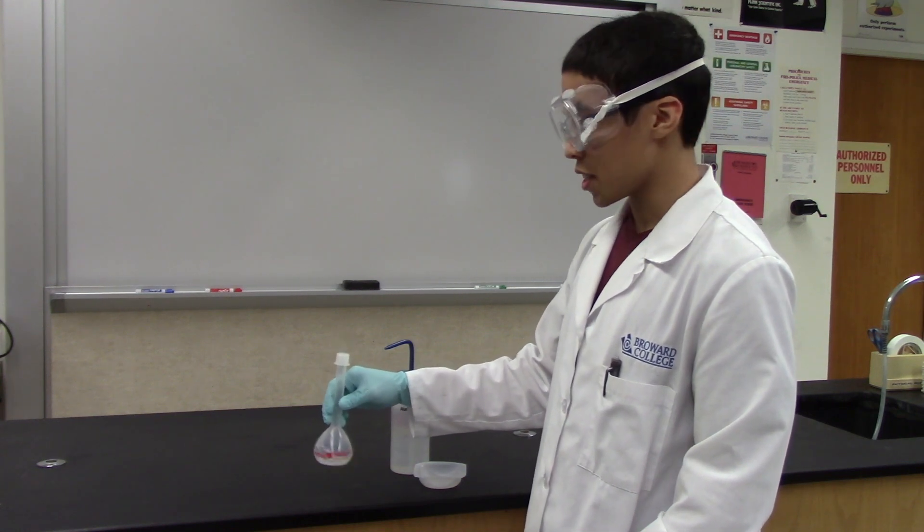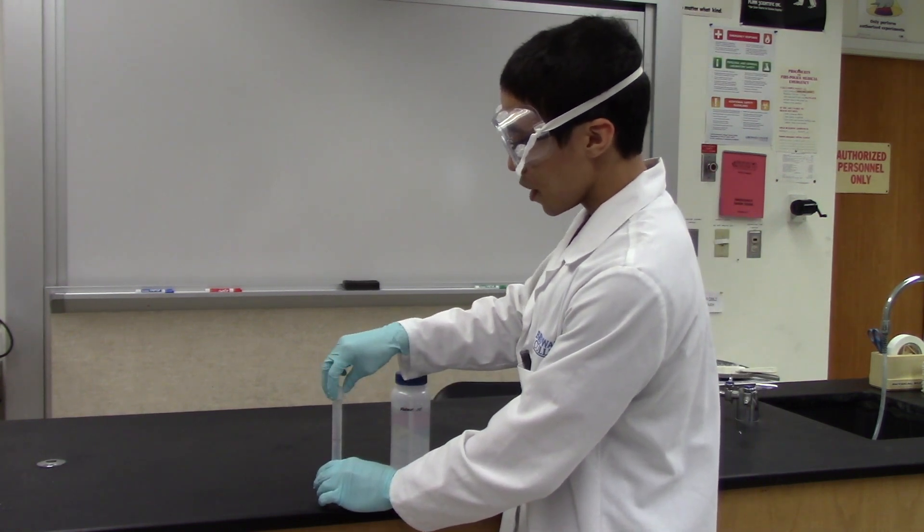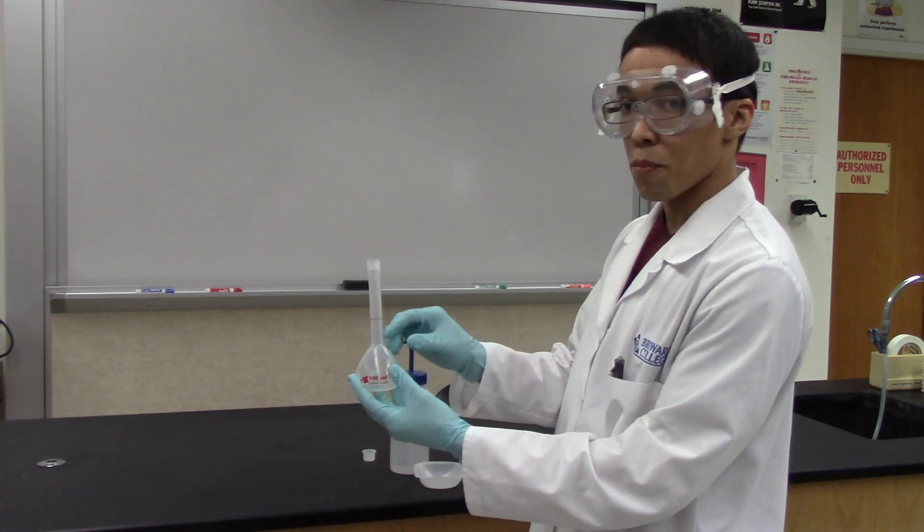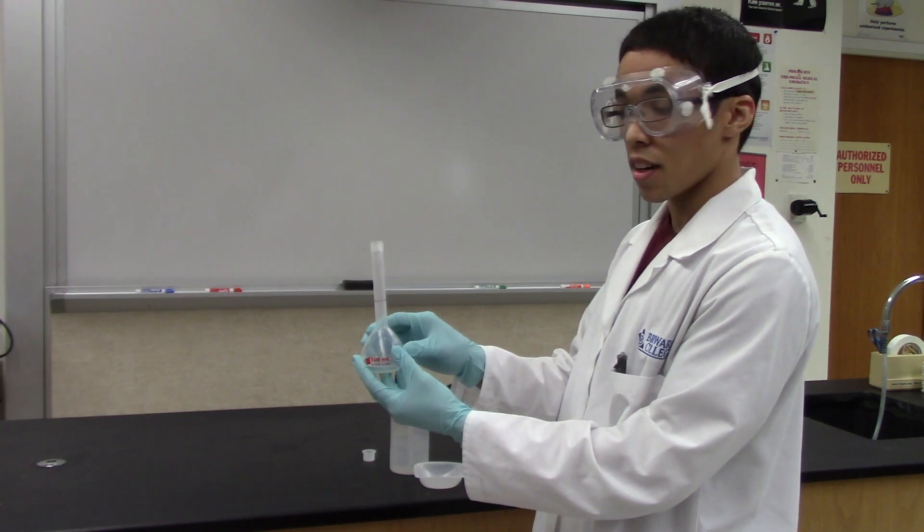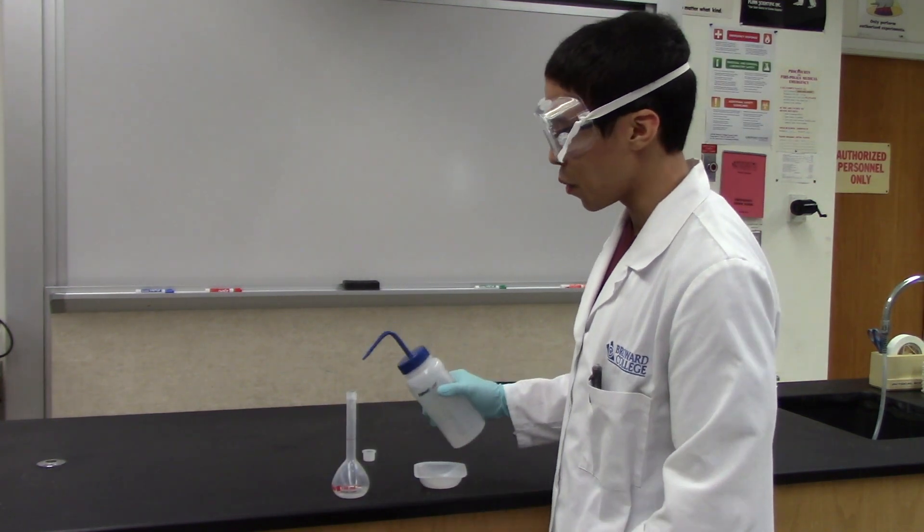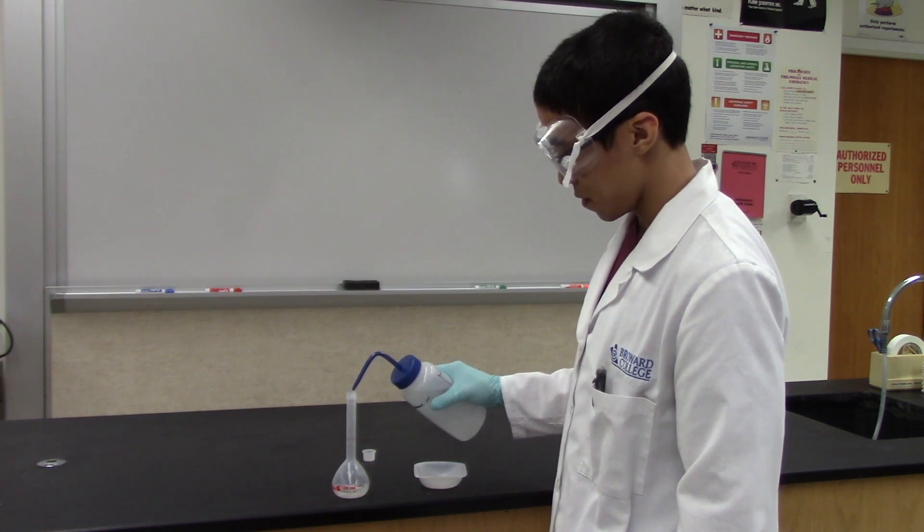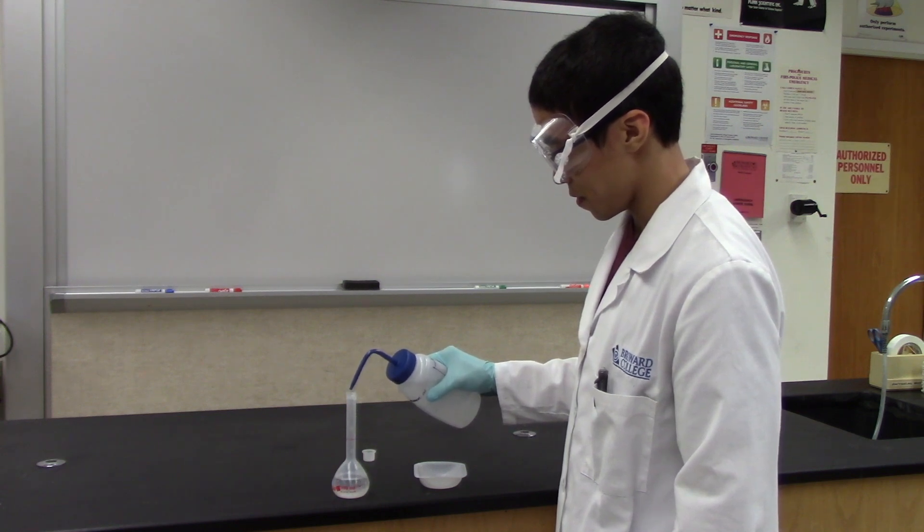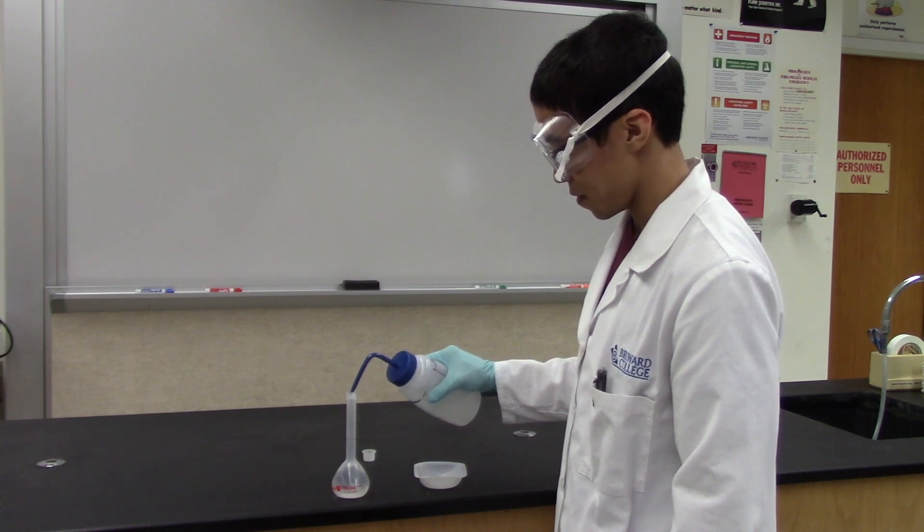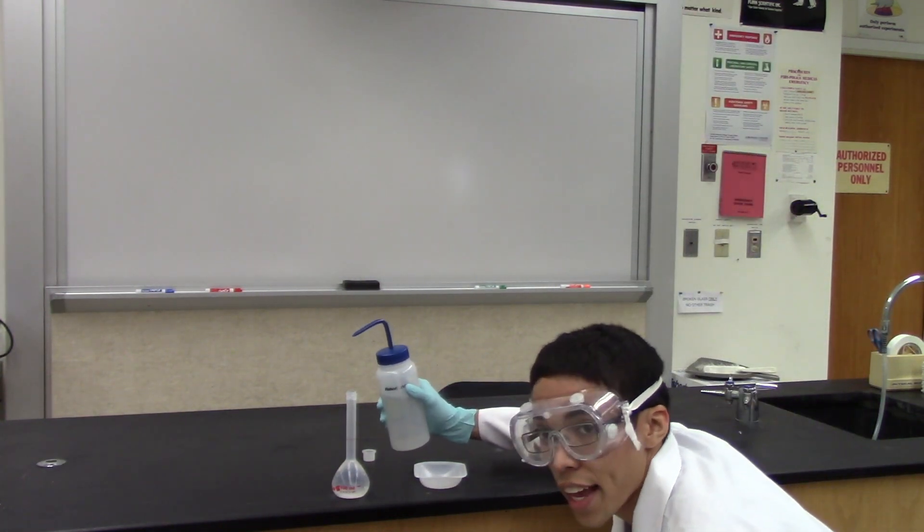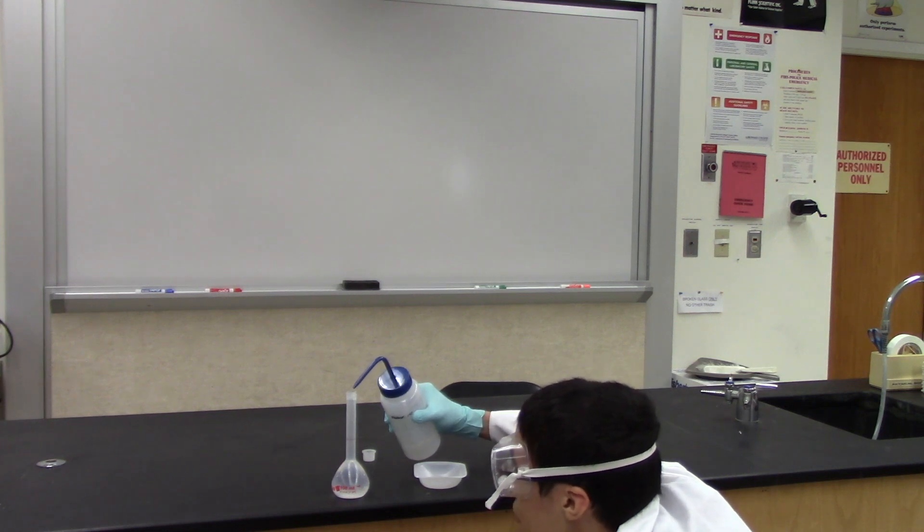Once the antacid tablet has been completely dissolved, you will then bring up the volume inside the volumetric flask up to the red line. Make sure that the bottom of the meniscus of the water just barely touches the red line. You will do this using more distilled water. As you approach the red line, make sure you are at eye level to get an accurate reading, and be careful not to go past the red line.